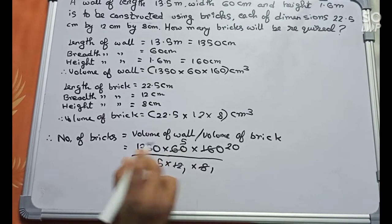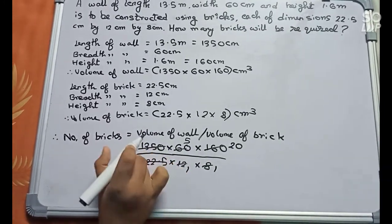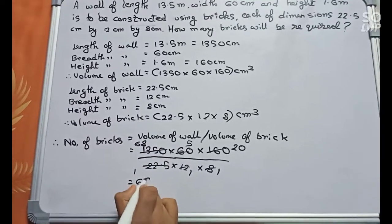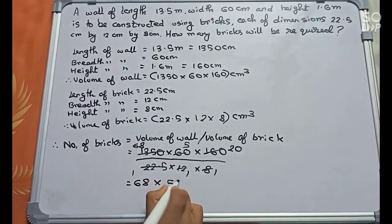Now simplifying 22.5 and 1350, we get 60. The number of bricks equals 60 × 5 × 20.